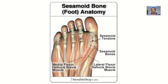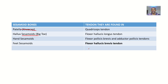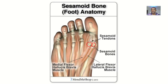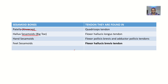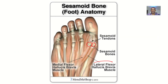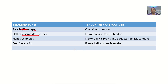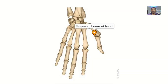Then we have the hallux sesamoids. These are found in the big toe. The tendon of the muscle they are found in is the flexor hallucis longus tendon. Note: the image here is labelled flexor brevis, but that should be the flexor hallucis longus tendon.